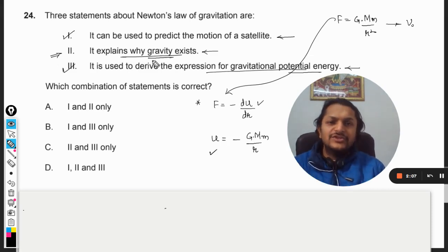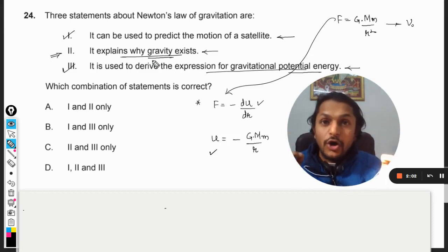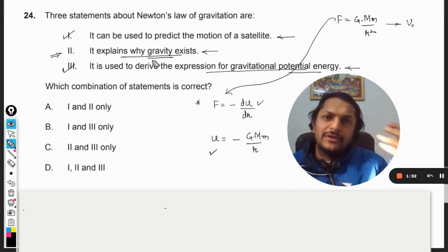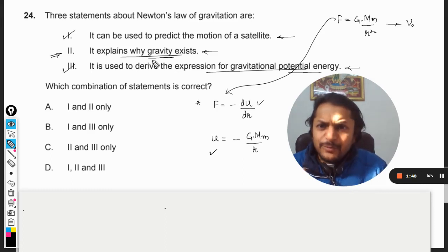But now coming to point number two: it explains why gravity exists. Well my dear students, first of all, what was the question that Newton was ever pondering on? There was an apple that fell near Newton. So definitely he was pondering over this thing: why it has fallen.